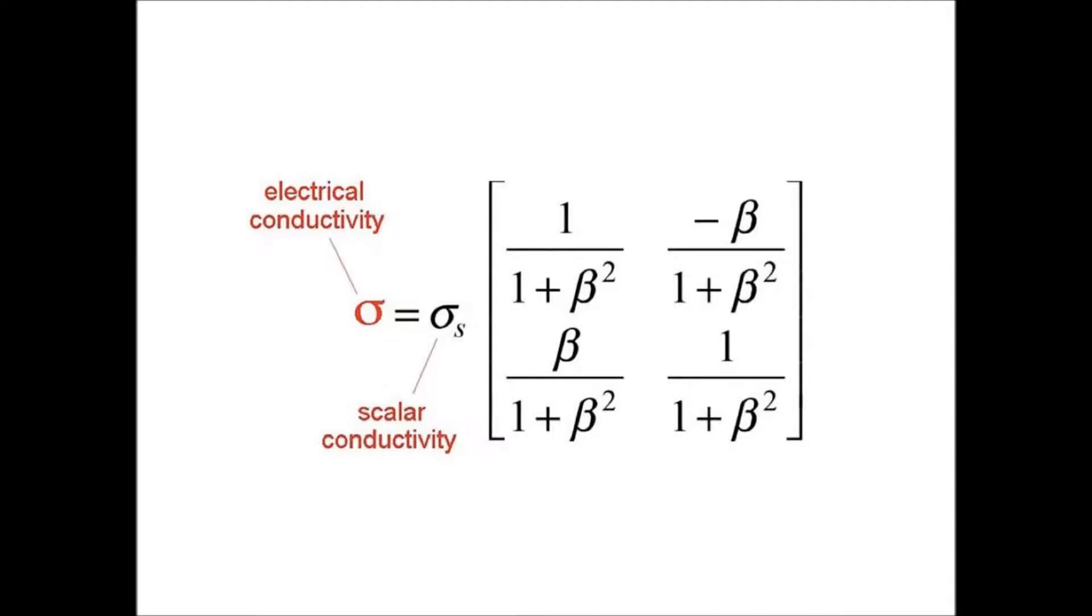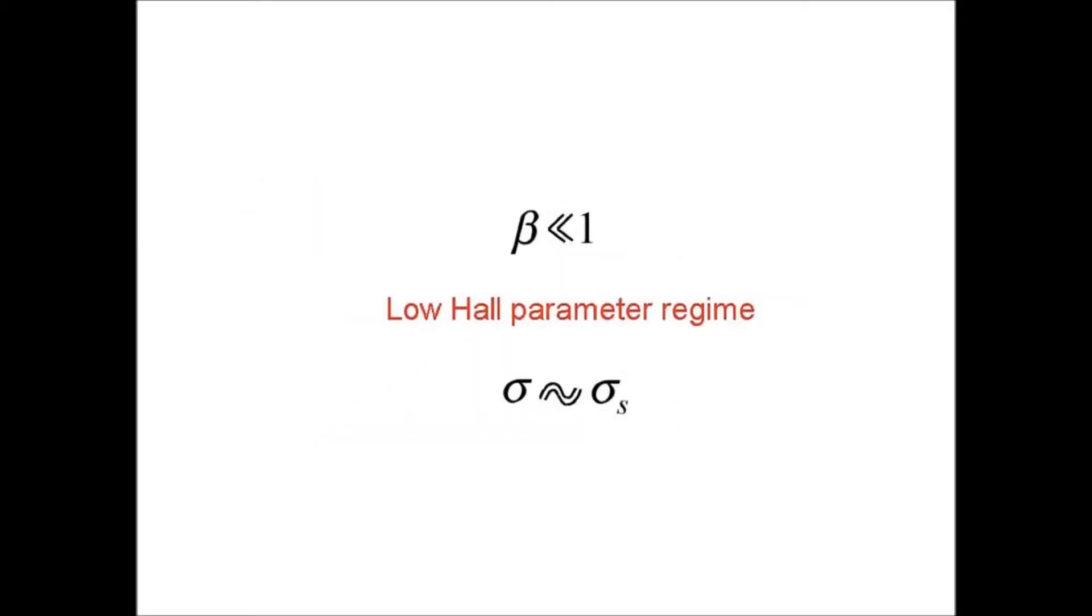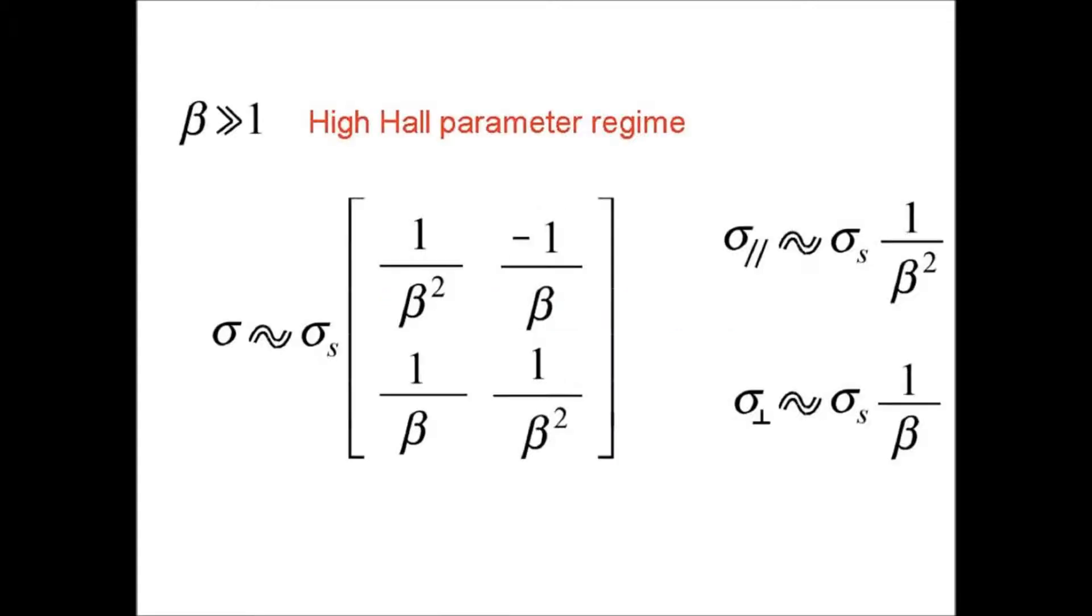The electrical conductivity becomes the following matrix where β is the Hall parameter. Here you have this matrix. In black the scalar conductivity, in red the electrical conductivity. When the Hall parameter is low, the conductivity is close to the scalar conductivity. But at the opposite, when we are in high Hall parameter regime, then the conductivity is matrix.